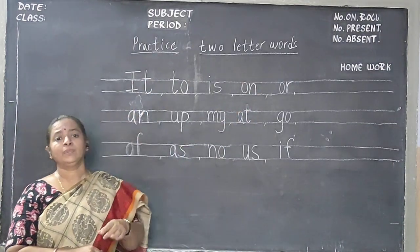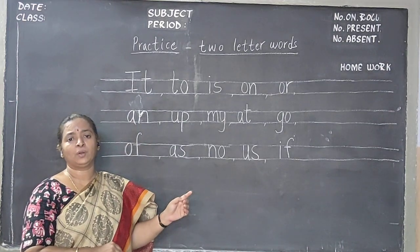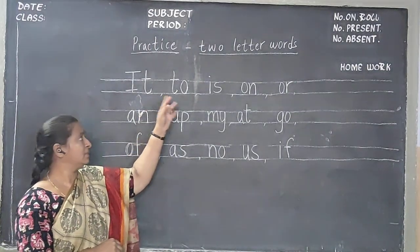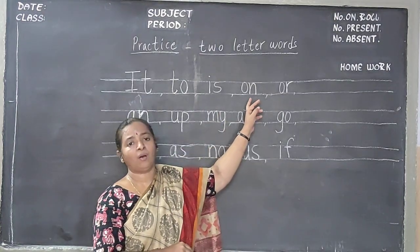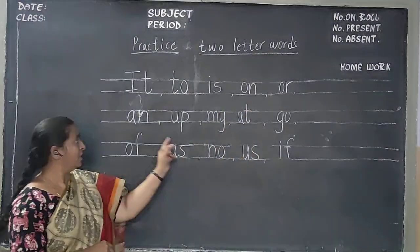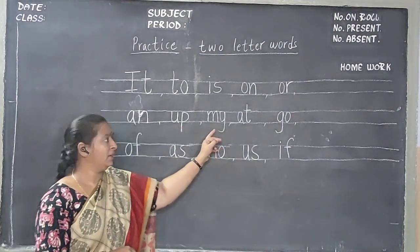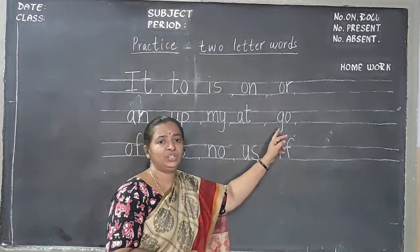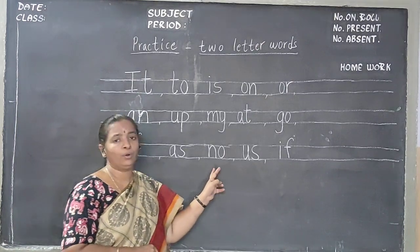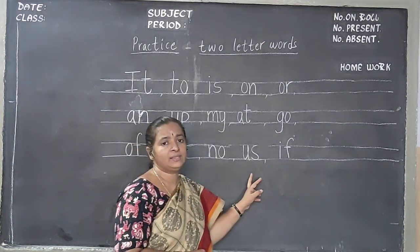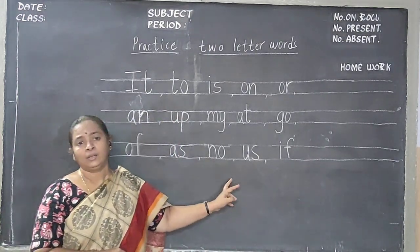Practice them, pronounce them. Look at the video and pronounce them. I T — it, T O — to, I S — is, O N — on, O R — or, A N — an, U P — up, M Y — my, A T — at, G O — go, O F — of, A S — as, N O — no, U S — us, I F — if. I have given 15 two letter words.